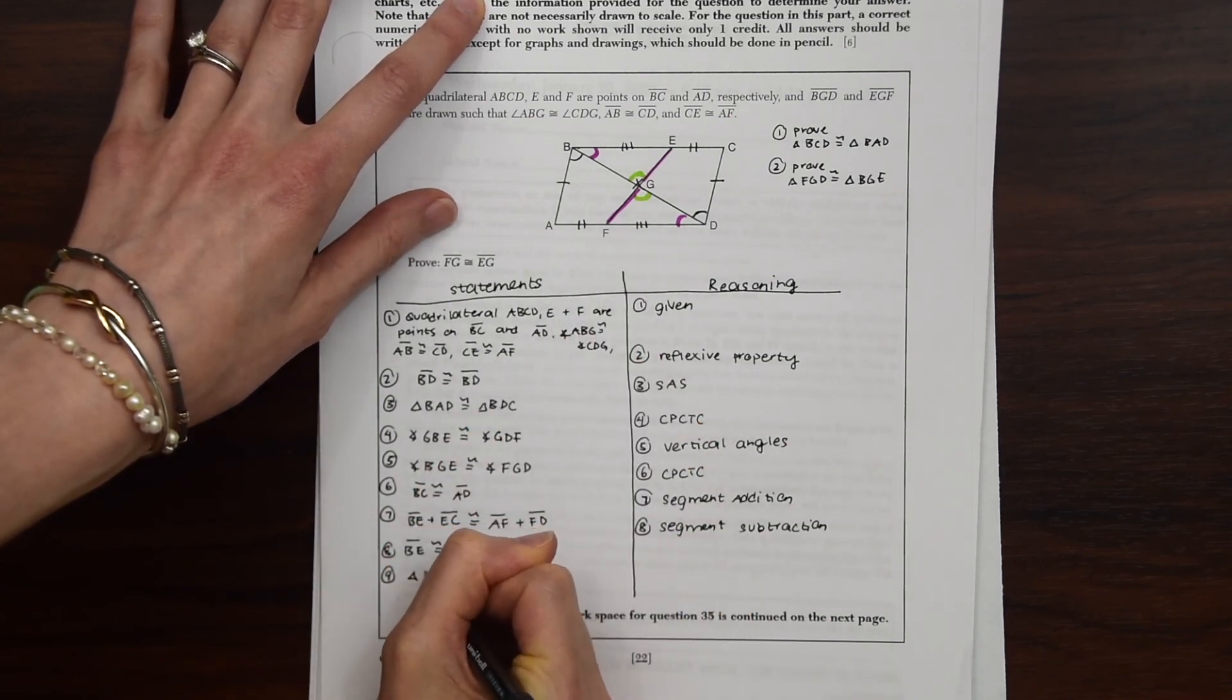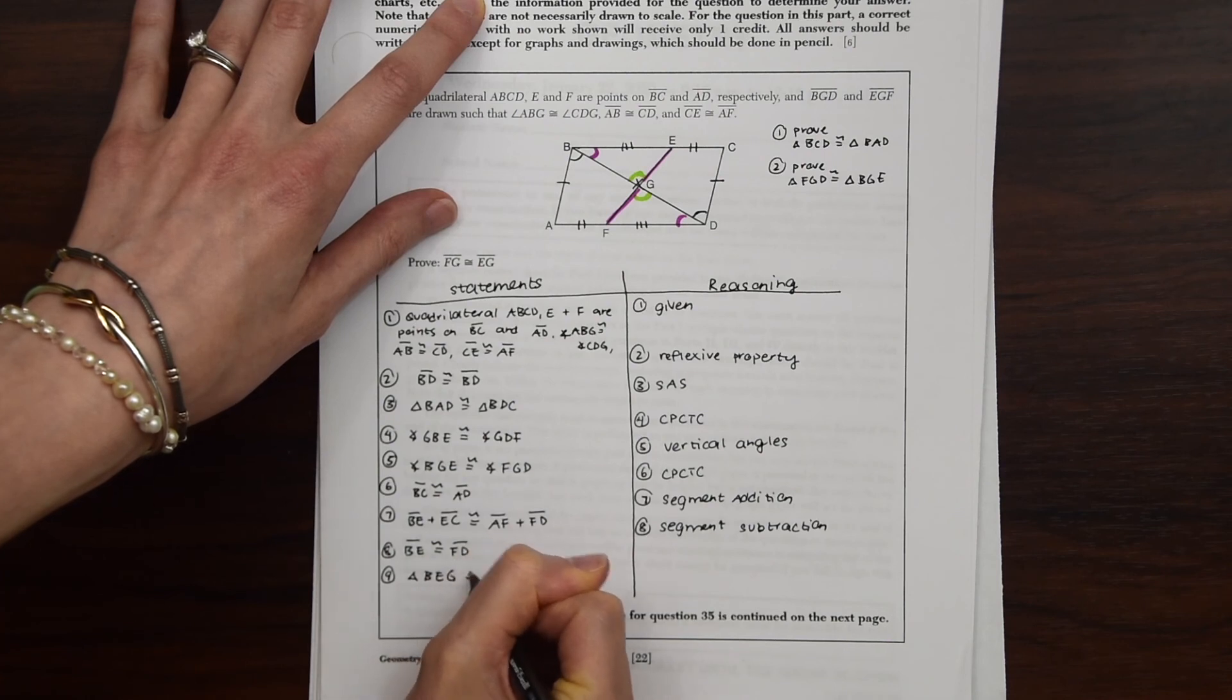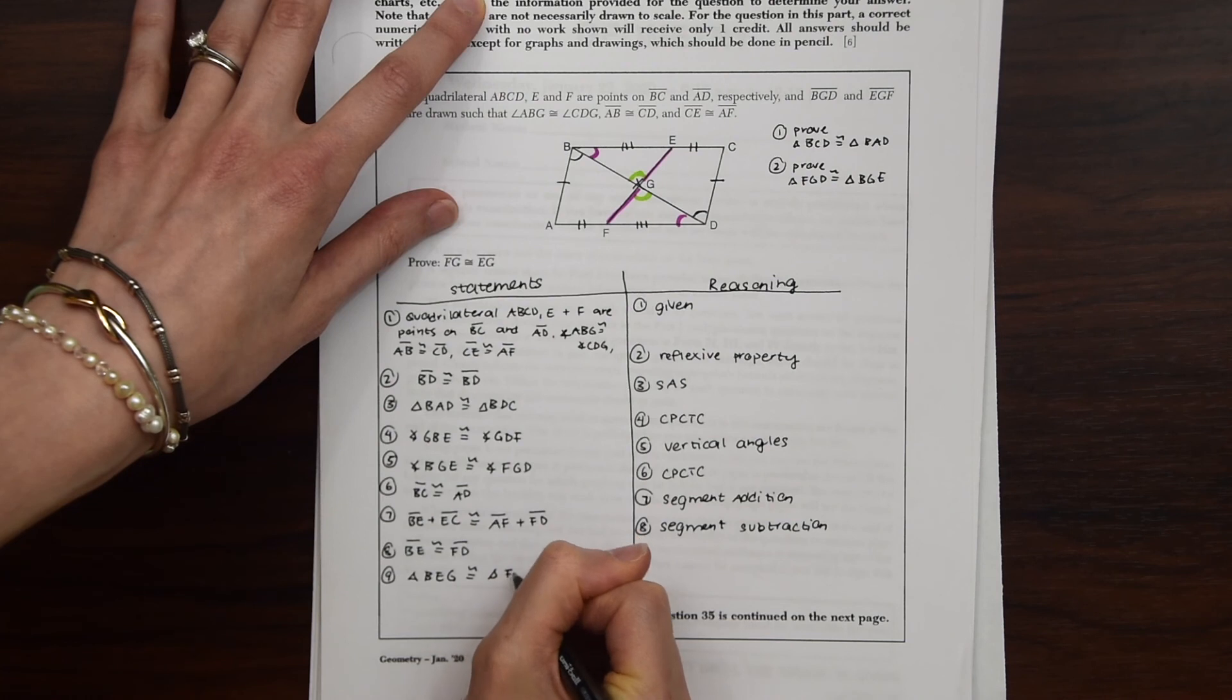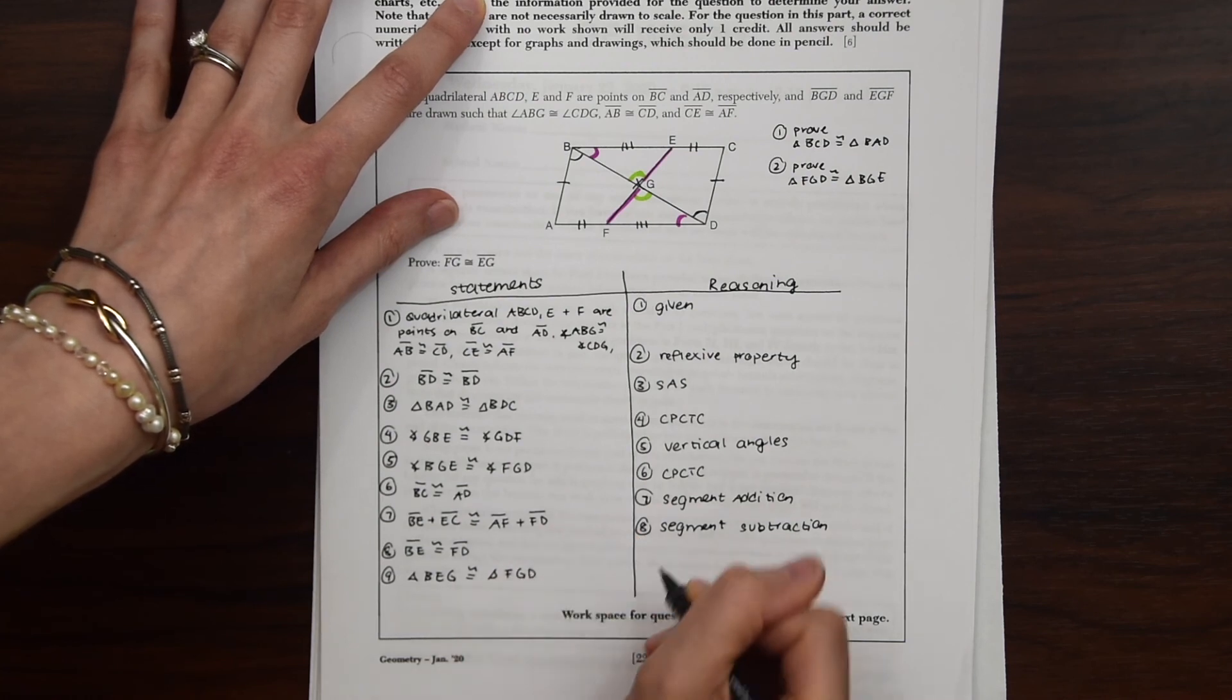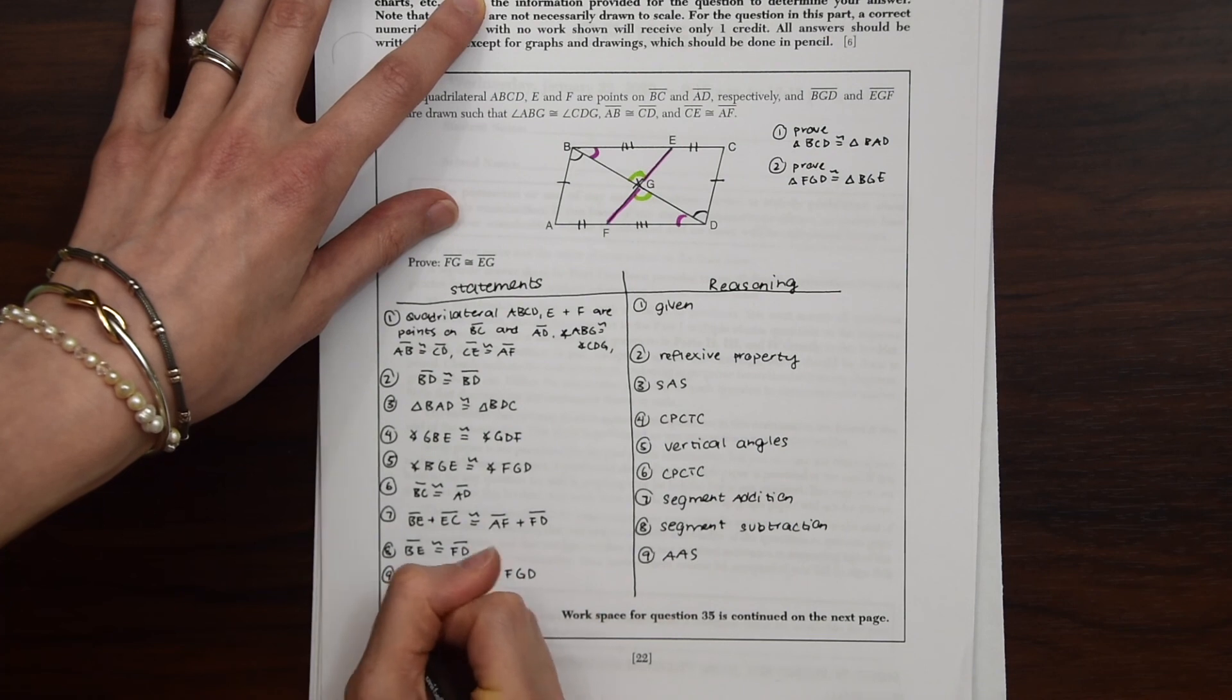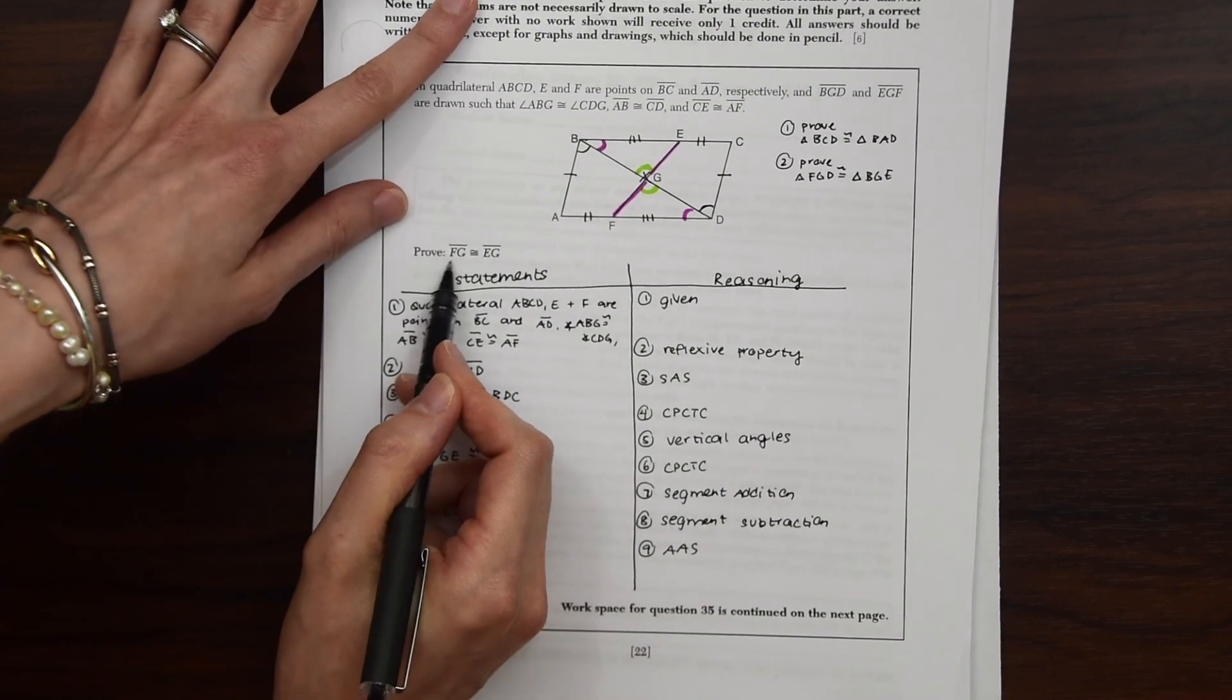So we have triangle BEG is congruent to triangle FGD. And this is based on angle, angle, side. And now lastly, we can finally prove what they want us to.